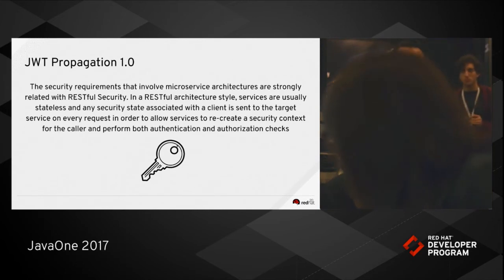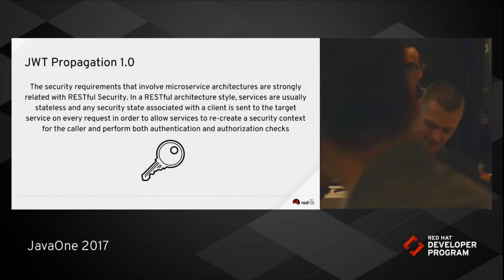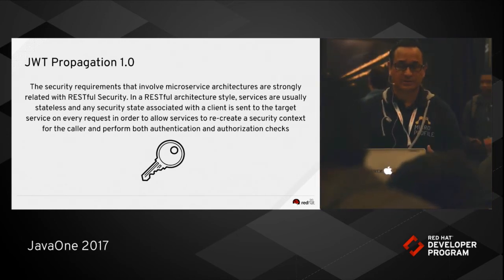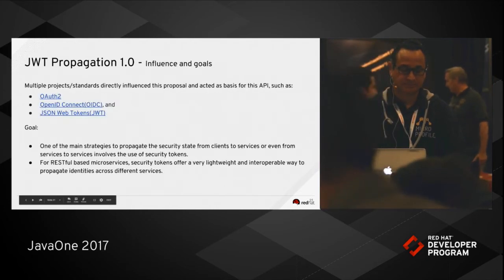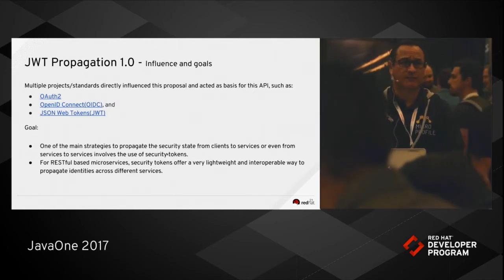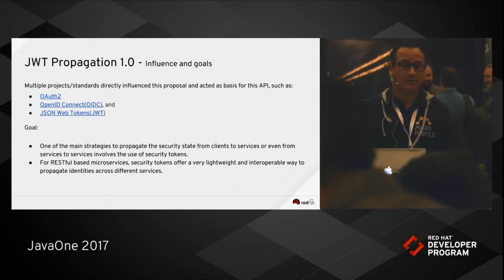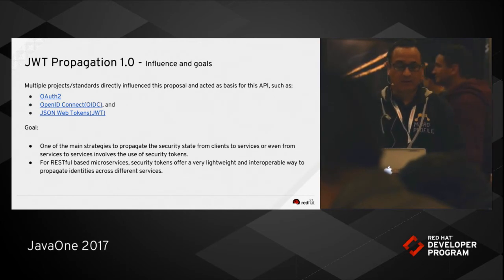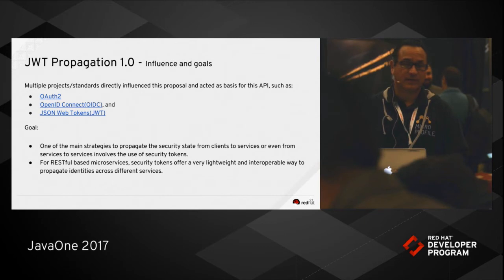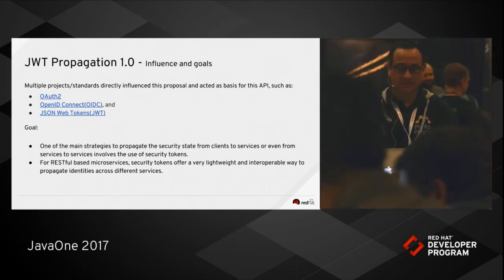JWT Propagation is about security requirements that involve microservice architectures, since they are related to RESTful-type security. In this style, services are usually stateless, and any security associated with a client is sent to the target service on every request in order to allow services to recreate a security context for the caller and perform both authentication and authorization checks. The community looked for inspiration and best practices to OAuth 2, OpenID Connect, and JWT. The goal of this API is to propagate the security state from clients to services, or even from services to services, using security tokens as a lightweight and interoperable way to propagate identities across different services.